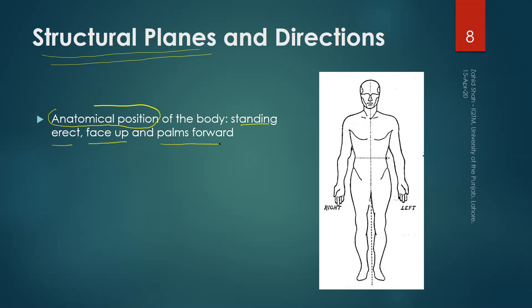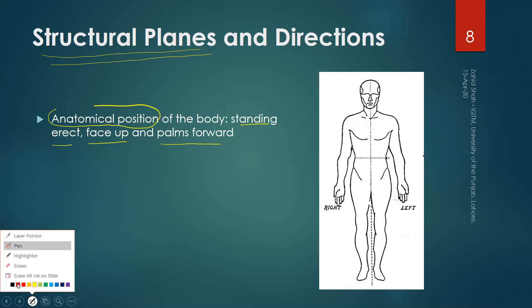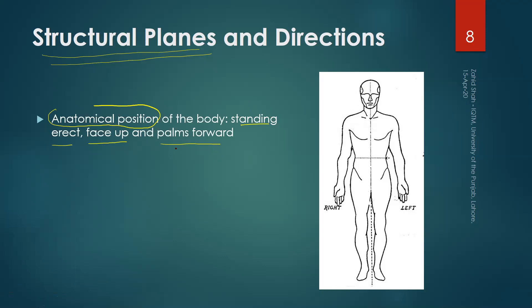Face up and palms forward. For example, if I ask you what is the front side of your hand, it is a relative question — we need some reference. That reference is called anatomical position. So you are standing erect, face in the forward direction — not tilted, not bent — and the palms are on the front side and the body is straight. That is the anatomical position.